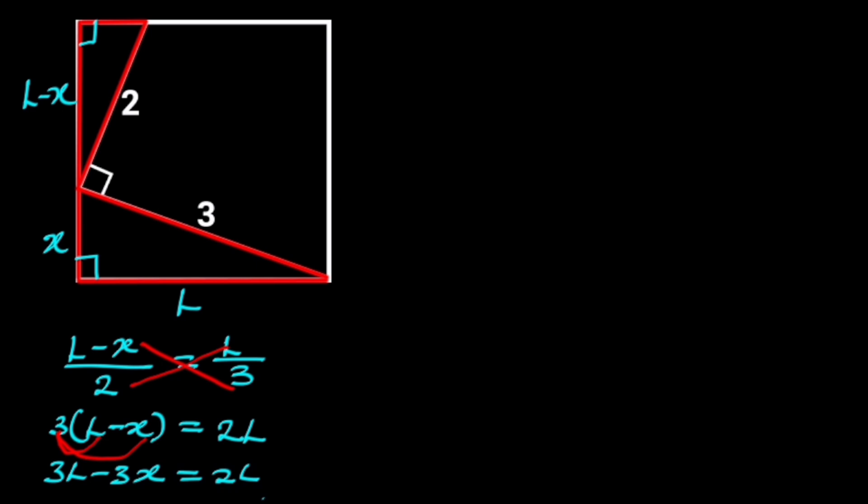Collecting like terms will give us 3L minus 2L is equal to 3X. 3L minus 2L is equal to L. So we are left with L is equal to 3X. Let's call this equation 1.